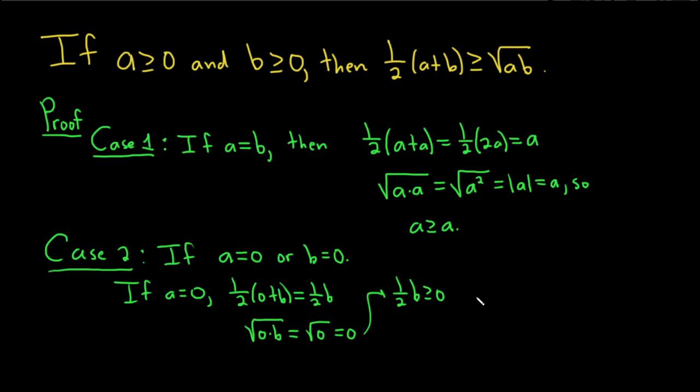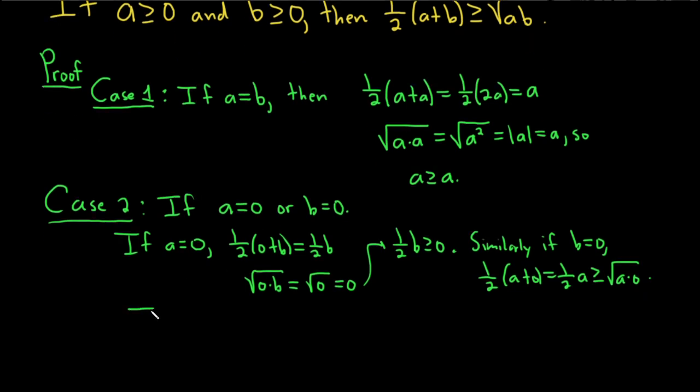If b is equal to 0, it's the same. Similarly, if b equals 0, we have 1/2(a+0), which equals 1/2 a, which is certainly greater than or equal to the square root of a times 0, which is 0. If they're both 0, both sides are 0, so 0 is greater than or equal to 0. Everything looks good.